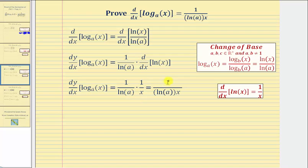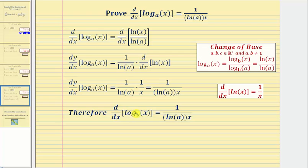Now when we multiply, we get one divided by natural log a times x, which proves the derivative of log base a of x with respect to x equals one divided by natural log a times x.